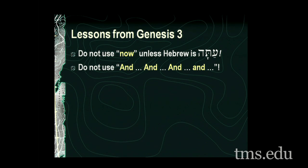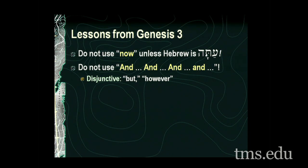When translating the wayyiqtol verbs, do not just translate 'and, and, and' repeatedly. Instead, if you have a disjunctive use 'but' or 'however.' Disjunctives are with disjunctive clauses where you have waw plus non-verbs. You do have rare examples of wayyiqtol being used adversatively, but you will not have that in your current assignments. The wayyiqtol should be translated to show sequence. Use words like 'then,' 'so,' 'thus,' and 'therefore.' Determine which one you choose by the context.